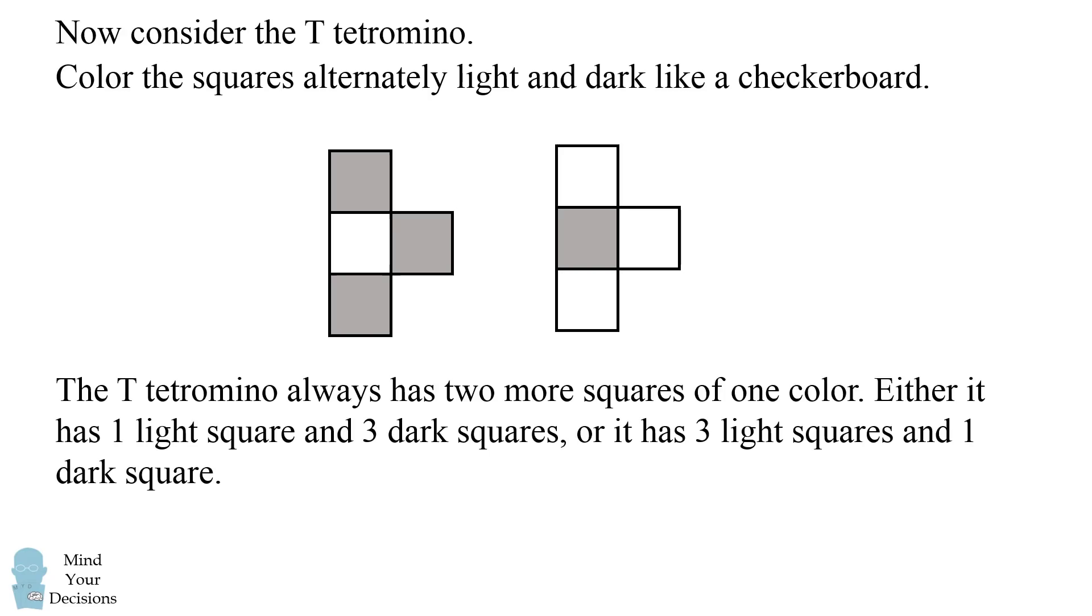Either it has one light square and three dark squares, or it has three light squares and one dark square.